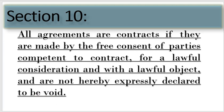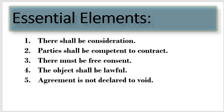Section 10 lays down various essential elements that must be present so that an agreement can be considered as a contract under the Indian Contract Act. The first part of the section talks about consideration — consideration might be past or present, and even future consideration is valid.